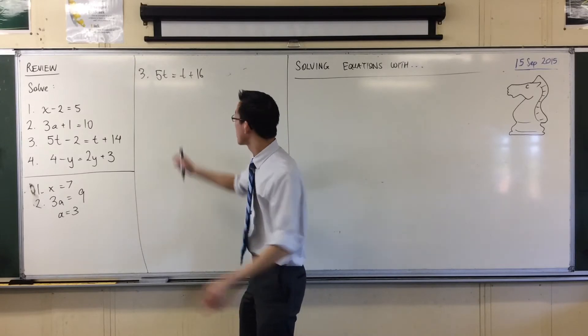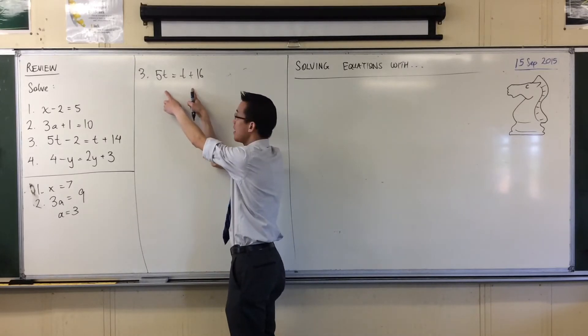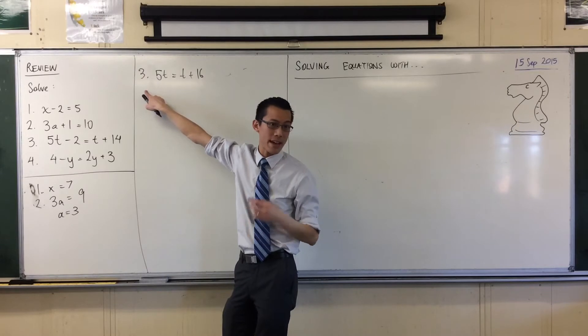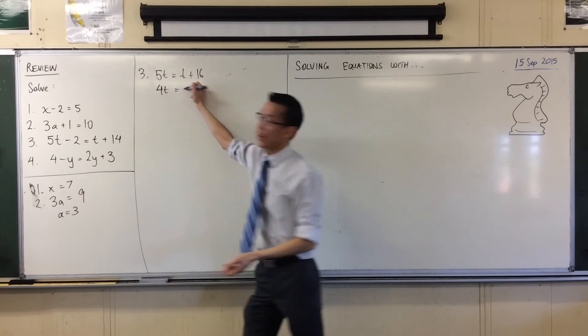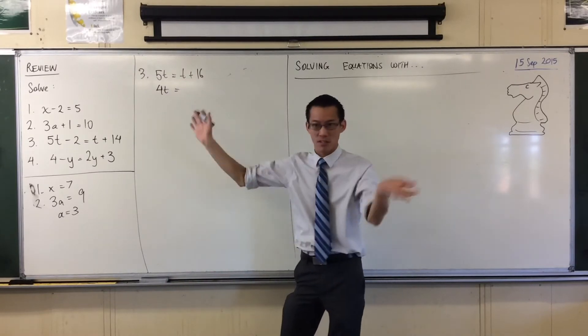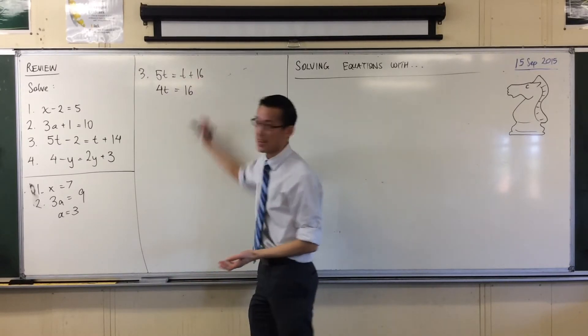I take away, I minus T from both sides, right? When I do that to the left hand side, that leaves me with 5T take away 1, so 4T. When I do it to the right, that T just disappears, so I just get left with the 16. Last step?